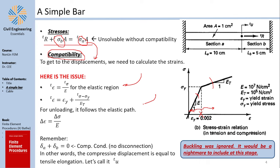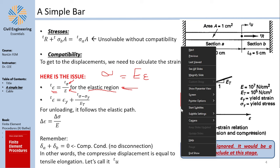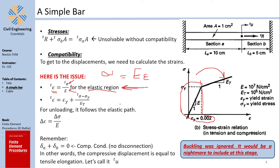Look at the two equations on the left side. You know Hooke's law: sigma equals the elastic modulus multiplied by strain, which you can rewrite as strain equals sigma over E. This is valid for the linear, elastic region only. Anything outside that region cannot be covered by this equation, and we need another equation.